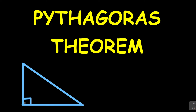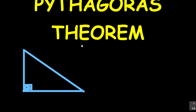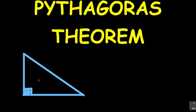So with the Pythagoras theorem, the first thing you need to see is that 90 degrees. If you don't see it, don't apply it. Now, what does the theorem say? The theorem of Pythagoras came up with a formula. If the longest side is called R, and one shorter side is X, and the other shorter side is Y...